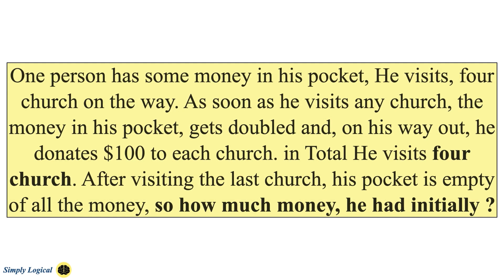One person has some money in his pocket. He visits 4 churches on the way. As soon as he visits any church, the money in his pocket gets doubled, and on his way out he donates $100 to each church. In total, he visits 4 churches. After visiting the last church, his pocket is empty of all the money.